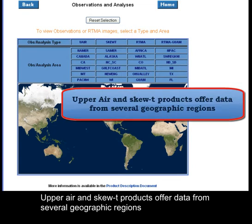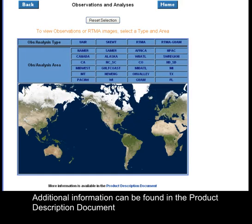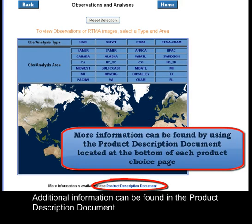Upper air and SKU-T products offer data from several geographic regions. Additional information can be found in the product description document.